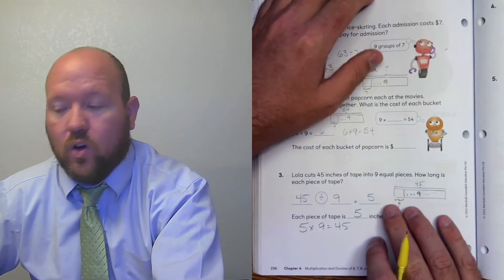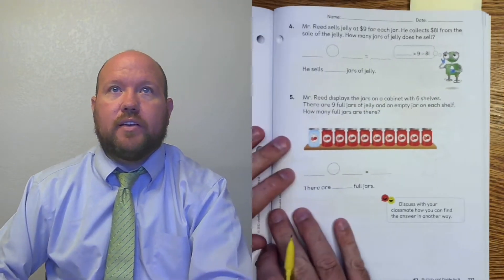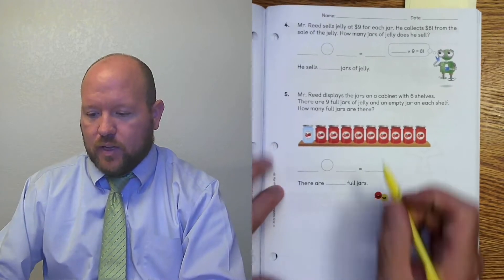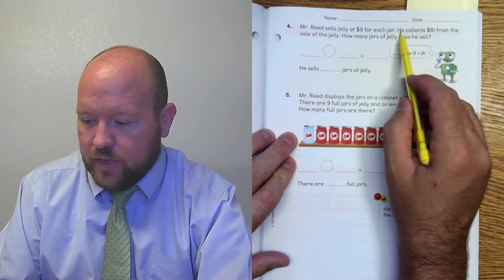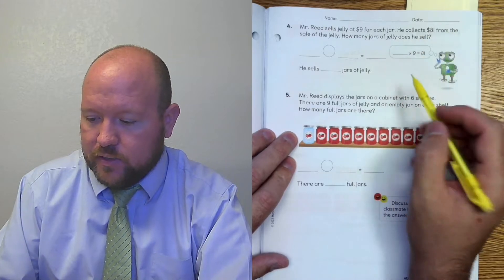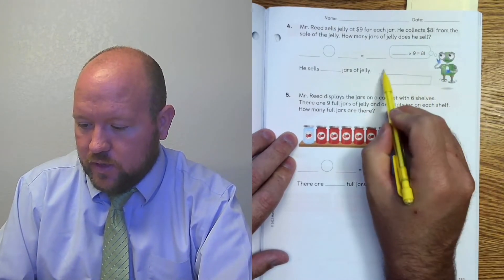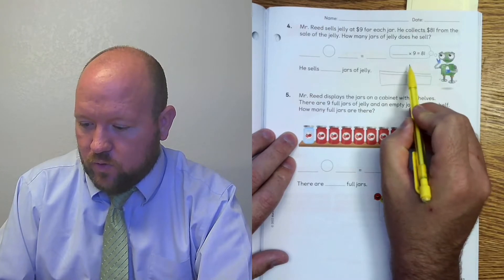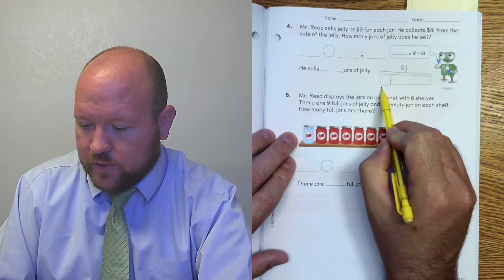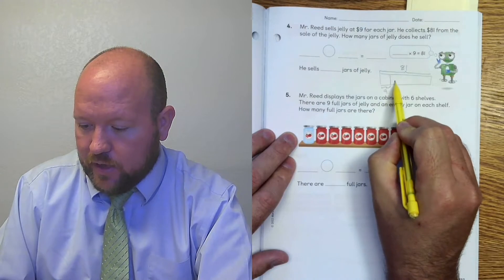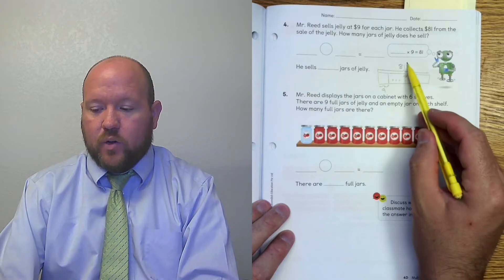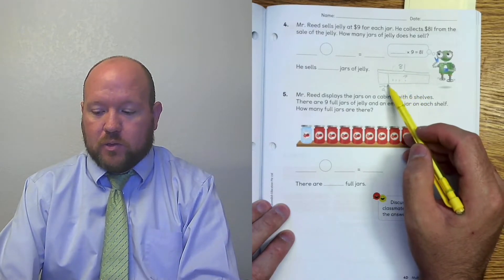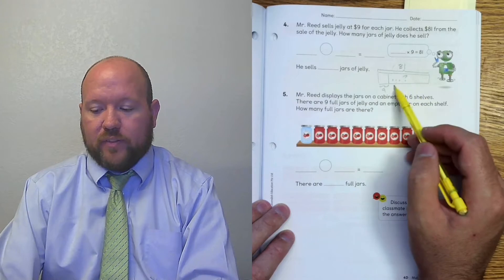Let's turn over to page 237. Mr. Reed sells jelly at $9 for each jar. He collects $81 from the sale of jelly. How many jars does he sell? So let's model this. He sold it for $81. Each jar is equal to 9. How many jars did he sell? So here, what operation am I going to use? If I know the total, am I going to use multiplication or division to figure out the number of groups? I'm going to use division.